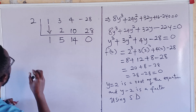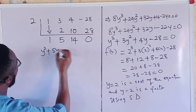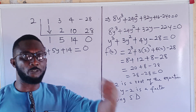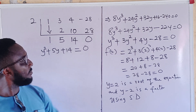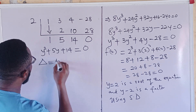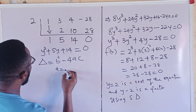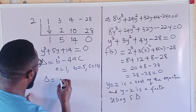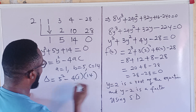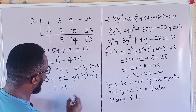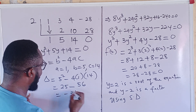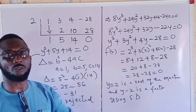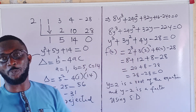We now solve the quadratic factor y^2 + 5y + 14 = 0 to find the other two roots. Before applying the quadratic formula, we test the discriminant: b^2 minus 4ac, where a = 1, b = 5, c = 14. The discriminant is 25 minus 4 times 1 times 14, which equals 25 minus 56 = negative 31. Since the discriminant is negative, this quadratic has no real solutions — we reject it.